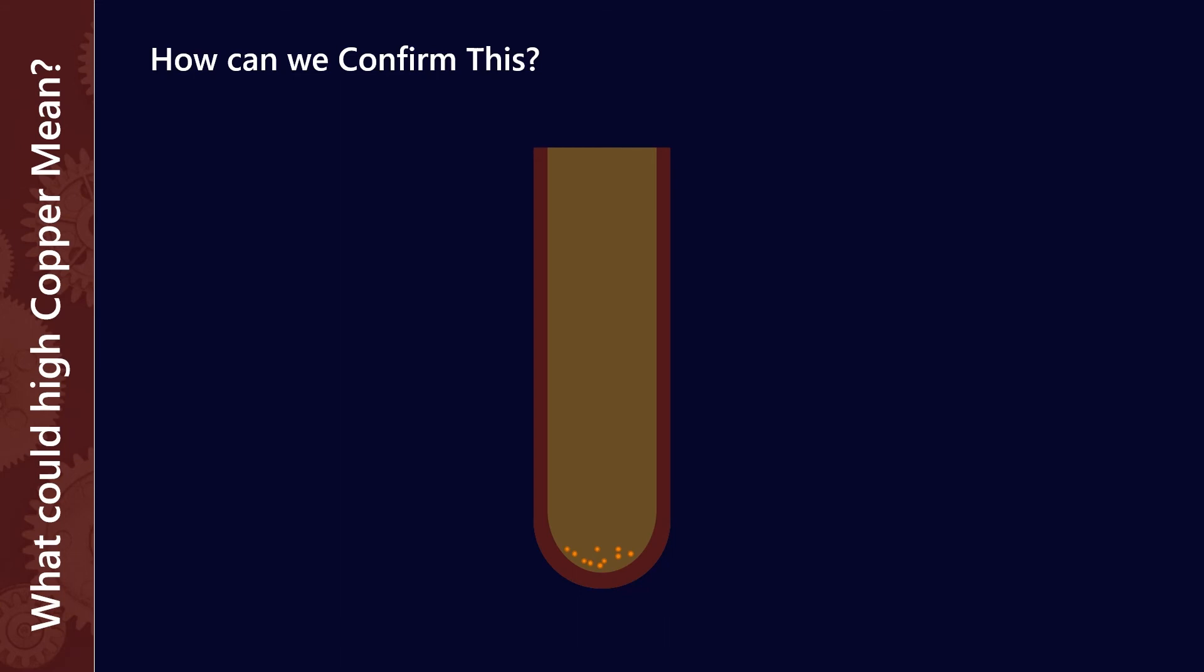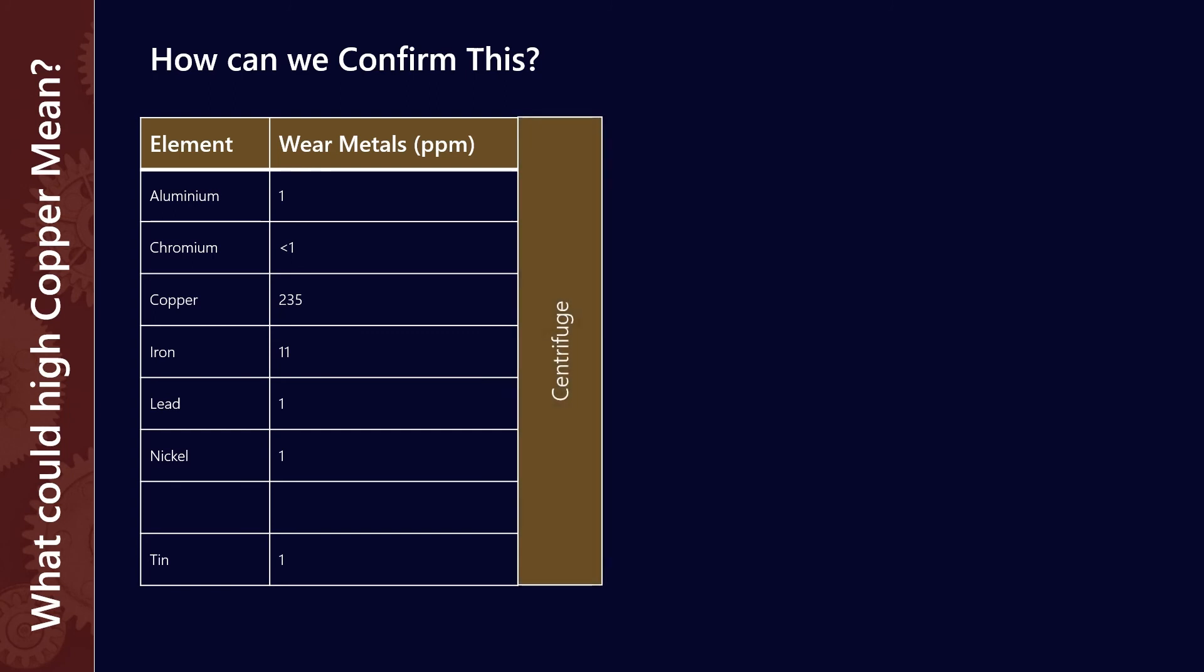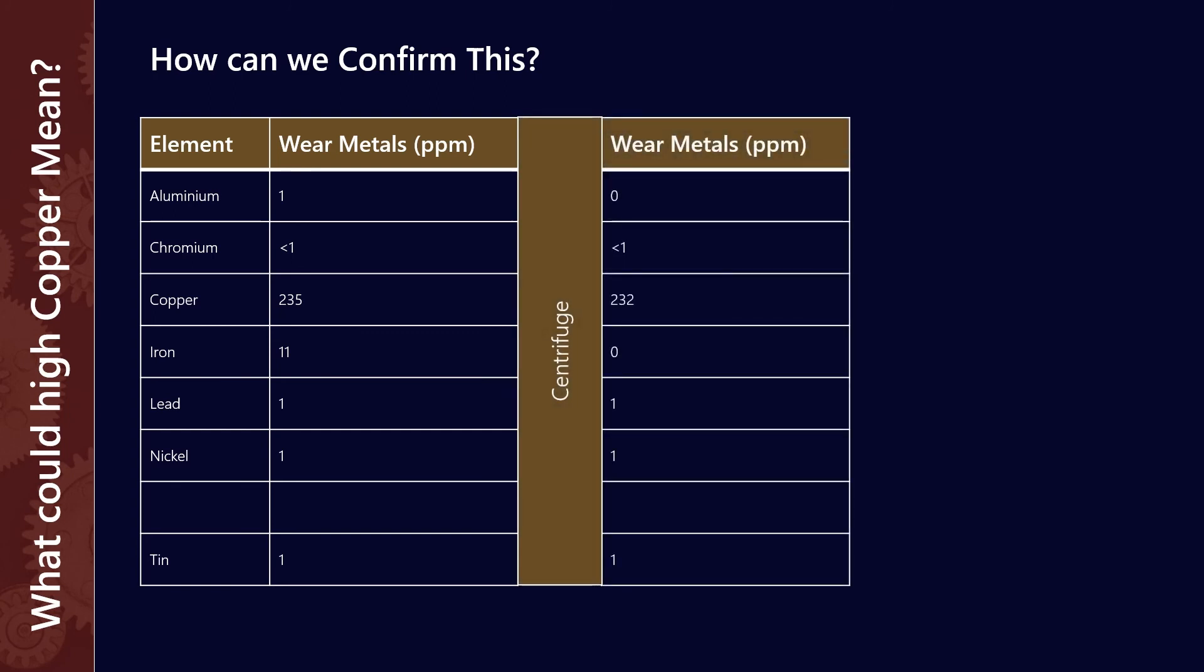So if we were to retake the oil out of this test tube and put it through the ICP machine we should see much lower levels of copper. All right so going back to our example we had 235 parts per million copper. If we were to get the lab to put it through the centrifuge and after that we saw very similar levels of copper this would give us confidence to say that it is passivation and not wear.